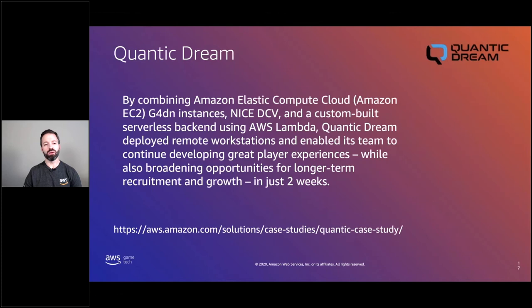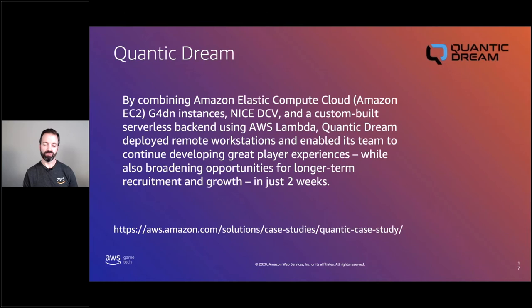Quantic Dream needed a mechanism for developers and artists to manage, find, connect, start, and stop their cloud workstations on Amazon EC2 G4DN instances. They created a custom serverless backend and small client application using API Gateway and Lambda. When a developer interacts with the backend, a Lambda function finds their workstation instance, checks if it's started or stopped, starts it if needed, finds the right IP address, and launches the NICE DCV streaming desktop client. Again, a simple but powerful use of serverless.